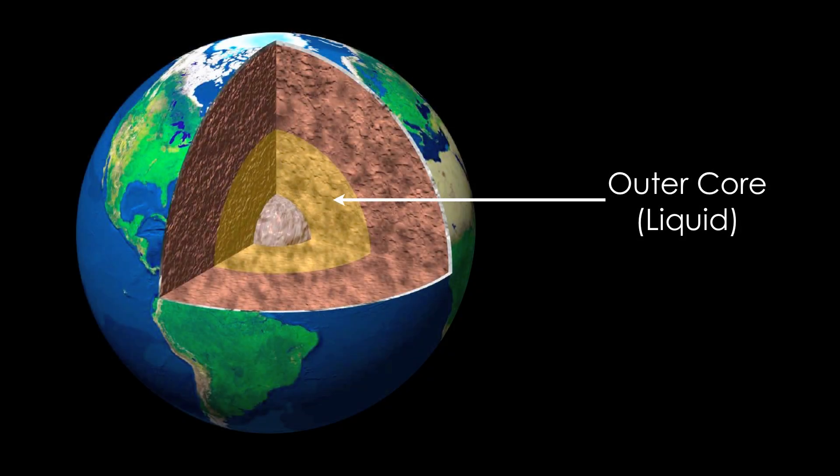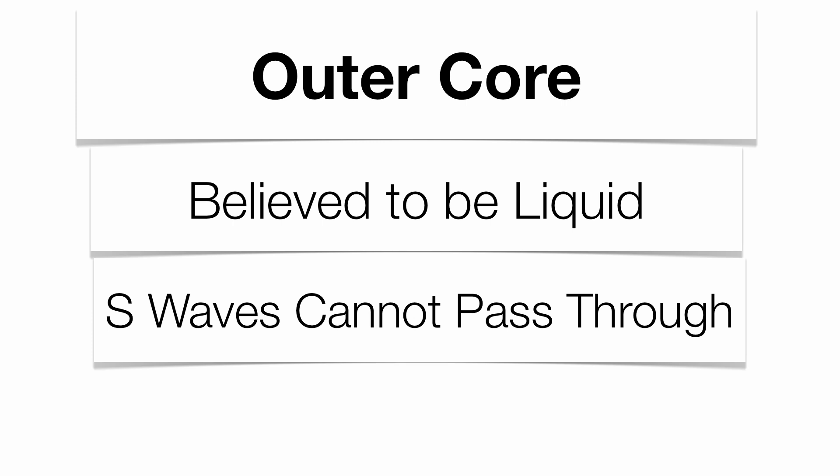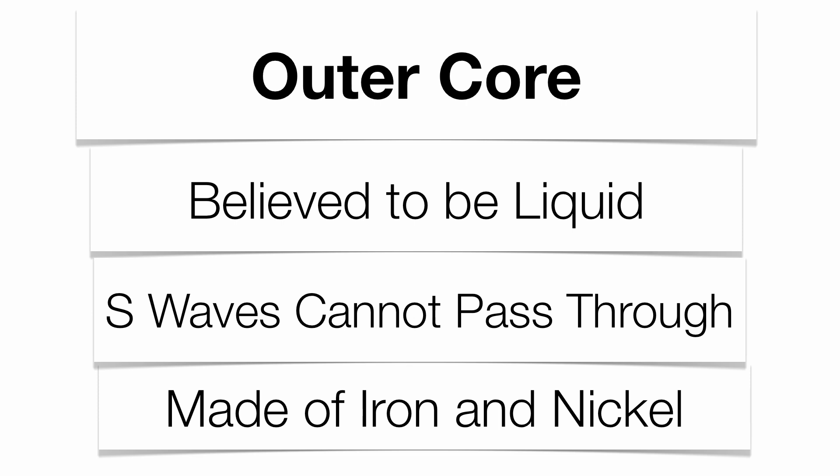The outer core is very important because through the study of S-wave travel, we believe the outer core is liquid — very simply because S-waves cannot pass through it. They get absorbed, and you get what's called an S-wave shadow zone on the opposite side of the earthquake focus. We also make the inference that it's made up of iron and nickel in liquid form. The outer core just has not had a chance to cool off and turn solid, so it's still believed to be liquid.